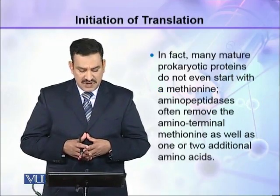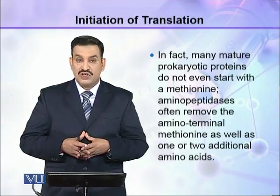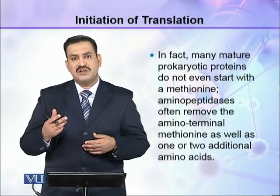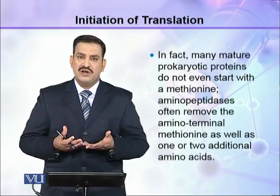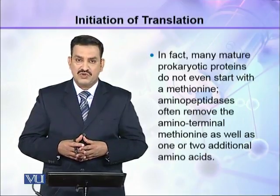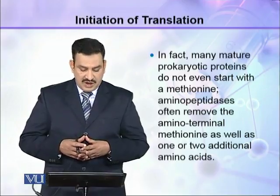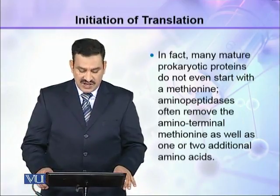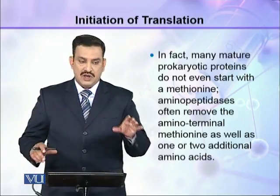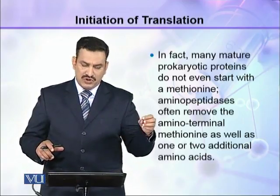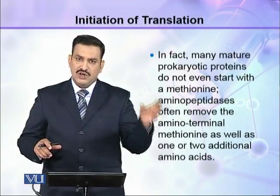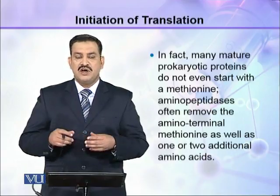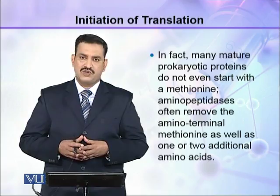In fact, many mature prokaryotic proteins do not even start with methionine. Even after the formyl group is removed, one might still expect methionine to be the first amino acid — but that is not always the case. Aminopeptidases often remove the amino-terminal methionine as well as one or two additional amino acids. So the first methionine and possibly a few following amino acids are removed by these special enzymes, meaning each mature protein can start with a different amino acid.